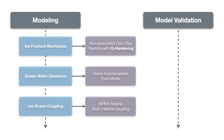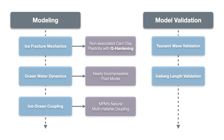But most importantly, we need a robust set of ways to validate this model, and we do this in three parts. In the first, we compare our simulated tsunami wave speeds against laboratory experiments. In the second, we use an analytic bending model to validate our simulated iceberg lengths. And in the third, we reproduce various characteristics of a real-world calving event measured at Ekib Sermia, an ocean-terminating outlet glacier of the Greenland ice sheet.